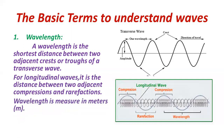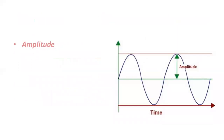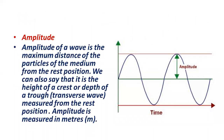The unit used to measure wavelength is meters. The second important term is amplitude. The amplitude of a wave is the maximum distance of the particles of the medium from the rest position. We can also say that it is the height of a crest or the depth of a trough, measured from the resting position.